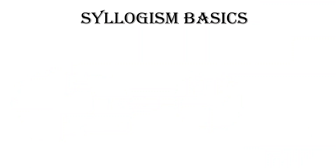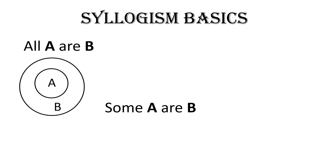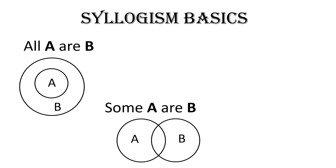I'm going to start with some syllogism basics. First: All A are B — this means the whole portion of A is contained in B, and it will be denoted with A inside B. Second: Some A are B — only some portion of A is in B, and it will be denoted accordingly.